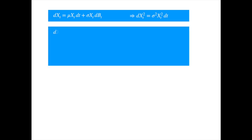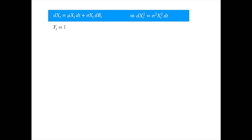Assume for a moment that the random component is not there, so we end up with a deterministic differential equation. We can move x to the left, so we end up with x on the left and t on the right. The left-hand side now is just the differential of log of x. Remember, the derivative of log of x is 1 over x. Notice we are assuming x cannot take the value 0, otherwise the world ends. We can now integrate both sides easily. Motivated by this, we try a solution of the log form for our stochastic differential equation.